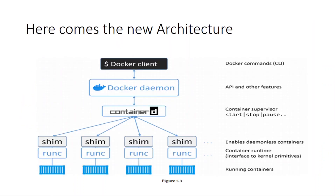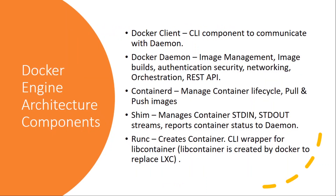The new Docker architecture has five main components. The first is the Docker Client — a CLI component that sends requests to the Docker Daemon. Whenever we type docker run or docker images, we are using the Docker Client. The Docker Daemon exposes APIs, listens to those APIs, and handles image management, image builds, authentication, security, orchestration, and more.